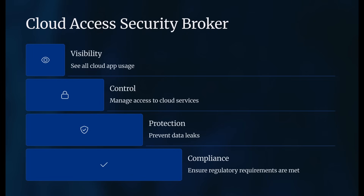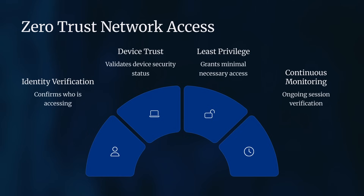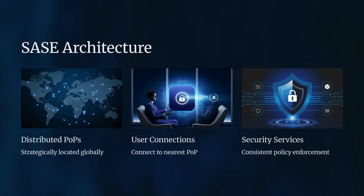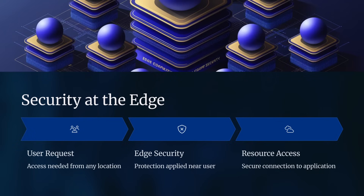At its core, SASE integrates several key components. First, Software-Defined Wide Area Network, or SD-WAN. This technology optimizes network performance by intelligently routing traffic across the most efficient paths. Second, Secure Web Gateway, or SWG. SWGs protect users from web-based threats by filtering malicious content and enforcing company policies.